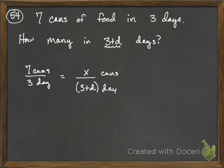Okay, so what we can do here is we can cross-multiply. Alright, 3x is equal to seven times three plus d.